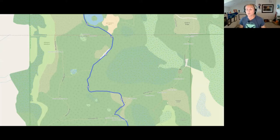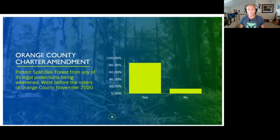And now, as you can see, it is shown on the hiking, biking, Waymarked Trails map. And then finally, we also tried political approaches where we submitted a charter amendment to the charter of Orange County, Florida, to protect Split Oak from any of its legal protections being weakened. We went before the voters in November 2020, and we won by 86%.